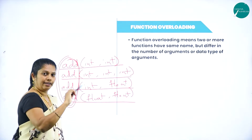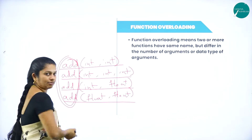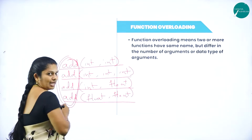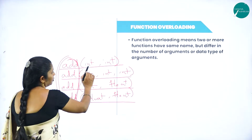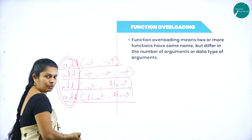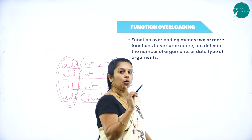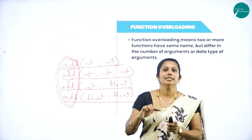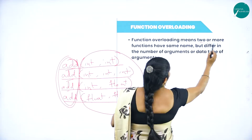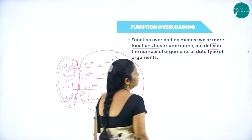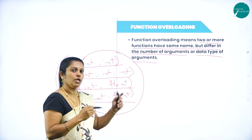In the first and second cases, we have two and three arguments respectively — differing in number of arguments. In the third and fourth cases, both have two arguments but the data types differ: one has int and float, the last has both float. So function overloading means two or more function names are the same but differ in number of arguments or data type of the argument.